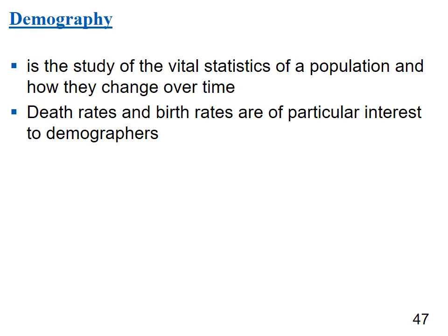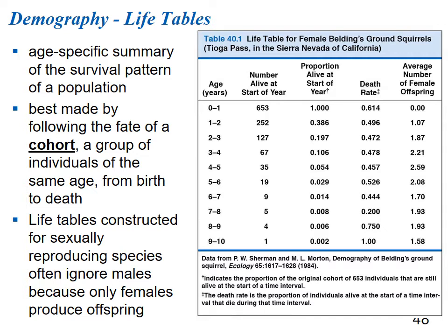Demography is the study of the vital statistics of a population and how they change over time, focusing on birth rates and death rates. A life table is an age-specific summary of the survival pattern of a population, best made by following a cohort — a group of individuals of the same age from birth to death. For sexually reproducing species, life tables often track only females since they directly produce offspring.